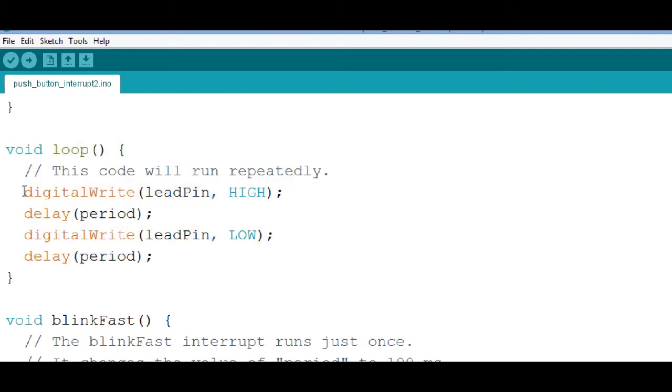We just digitalWrite to the LED pin high, turn that LED on. Delay period. Wait for whatever the period is. We start out at 2 seconds.